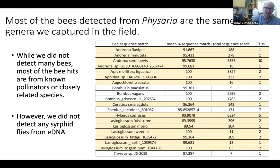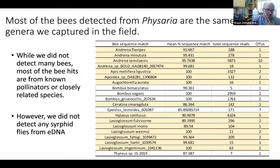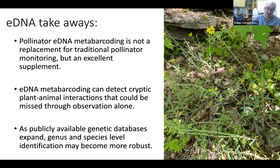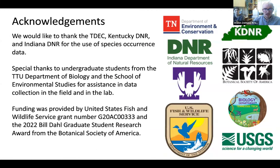Looking at the bees we detected using eDNA, we missed a lot of bees that we know are going to be effective pollinators of Fisaria. But of the bees we did detect using eDNA, the majority are either species we know are pollinating or are very closely related to known pollinators. We didn't detect any syrphid flies, which may have to do with them hovering off the flowers while feeding and not visiting for as long as the bees. As major takeaways: pollinator eDNA metabarcoding shouldn't be a replacement for traditional monitoring methods, but it is an excellent supplement — it can detect more cryptic plant-animal interactions, like moths visiting at night or parasitoid wasps that are difficult to observe and capture. We want to acknowledge our agency partners at Tennessee Tech and our funding partners with the U.S. Fish and Wildlife Service and the Botanical Society of America.